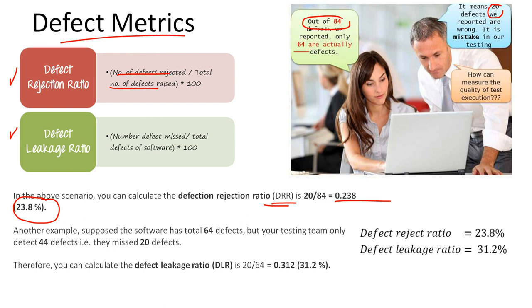Similarly, we can calculate defect leakage ratio. In another example, suppose the software has 64 total defects, but your testing team only detected 44 defects. We found 44 out of 64 total defects in the application, and we missed 20 defects.